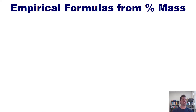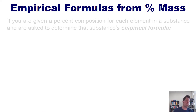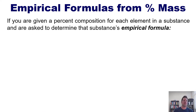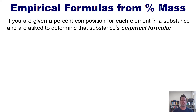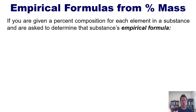Let's begin with empirical formulas from percent mass. Every once in a while you'll be given a problem in which you are informed of the percent composition of each element in a substance and are then asked to determine that substance's empirical formula. For example, you might see a problem that says you have a molecule that's 18% carbon and 12% hydrogen and 16% oxygen. Then it asks you what is the empirical formula for this compound. In that situation just follow these steps. Step one: divide each element's percent by its atomic weight.